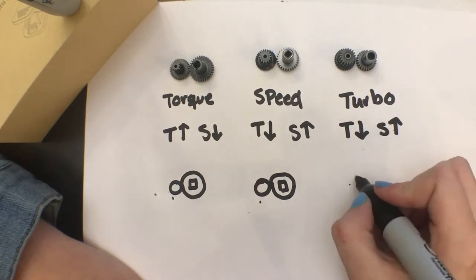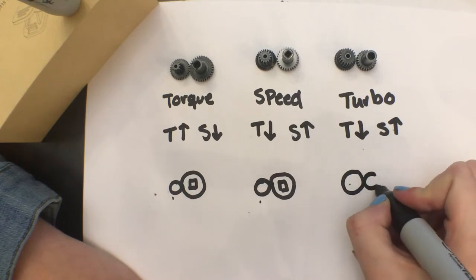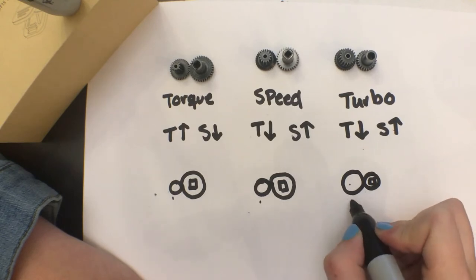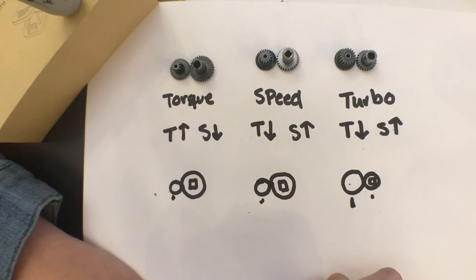You can tell these are turbo because the input gear is larger than the output gear. This is the only one where the input is actually bigger than the output. With the other ones, you compare the size of the input gears.